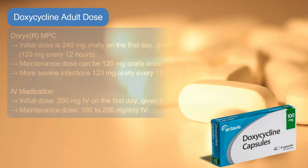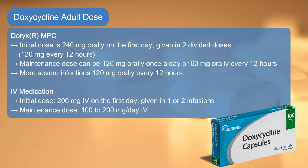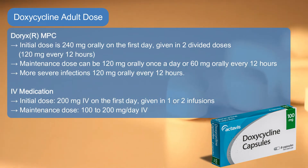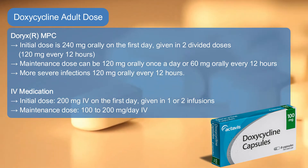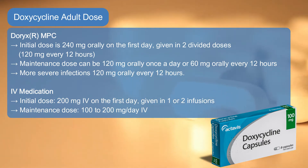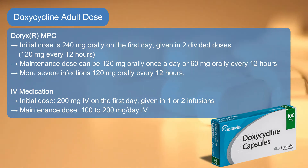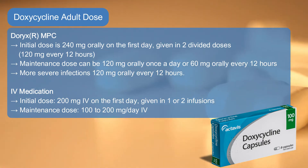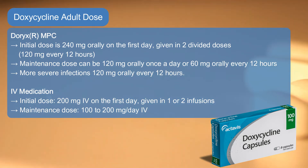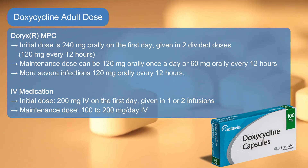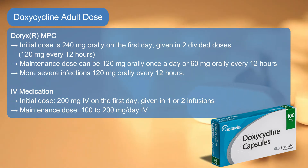Dorix MPC medication: Initial dose is 240 mg orally on the first day, given in 2 divided doses of 120 mg every 12 hours. Maintenance dose can be 120 mg orally once a day, or 60 mg orally every 12 hours. For more severe infections: 120 mg orally every 12 hours.